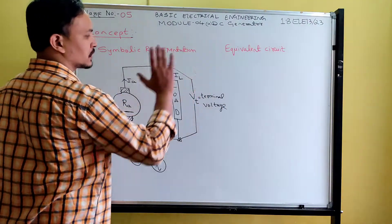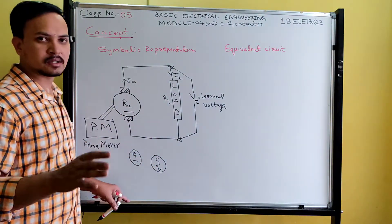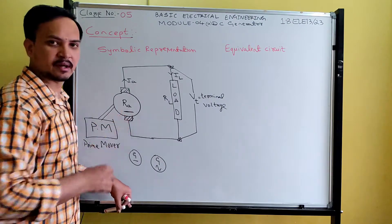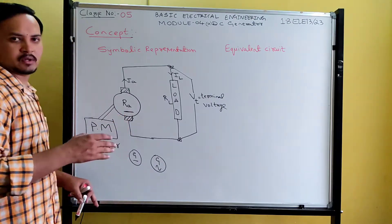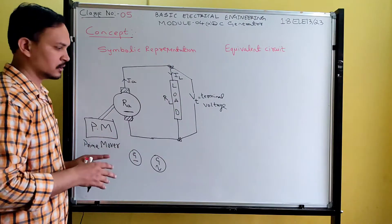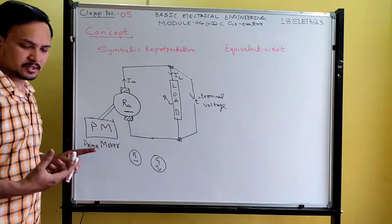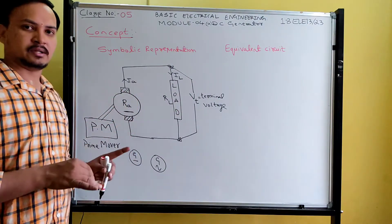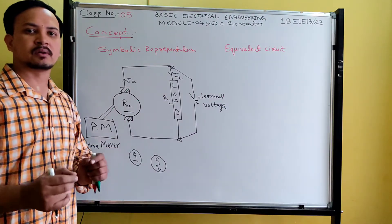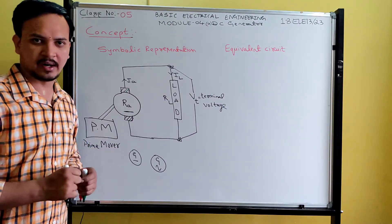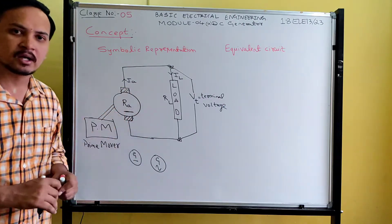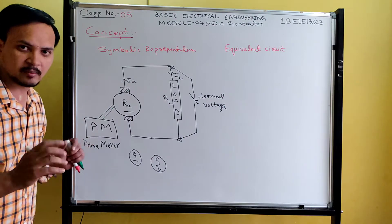Why is an equivalent circuit required? An equivalent circuit is nothing but the electrical circuit of a generator — it exists for motors too, but we are discussing generators. In order to analyze the machine parameters, an electrical circuit is required. So how do you write the electrical circuit from this symbolic representation? That is very much important.